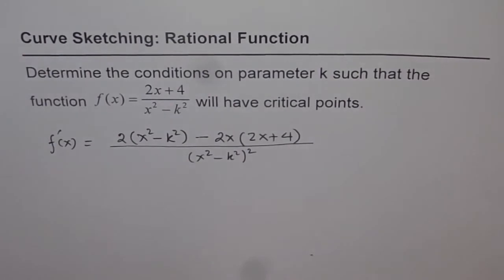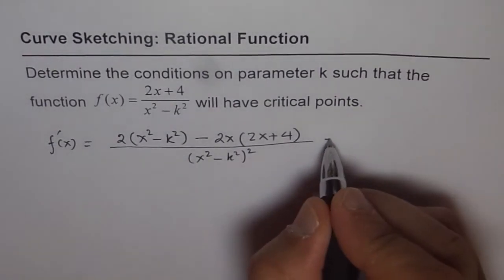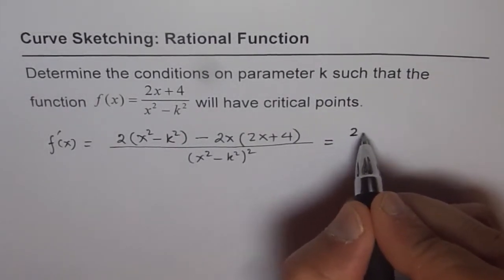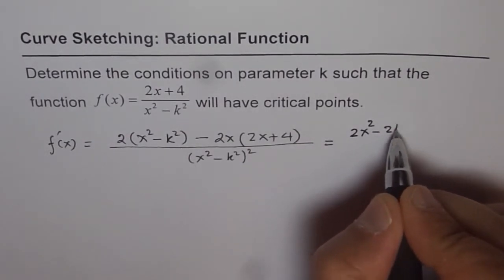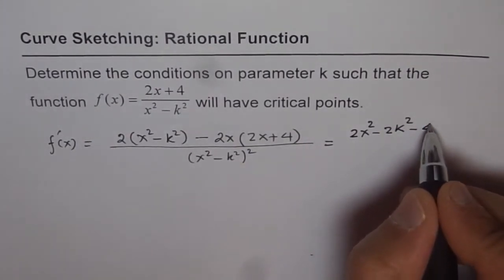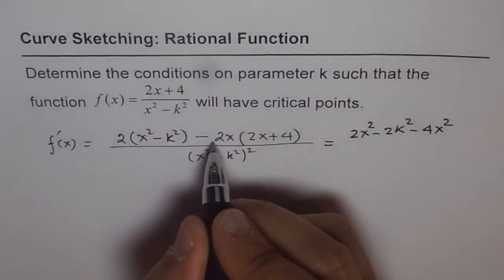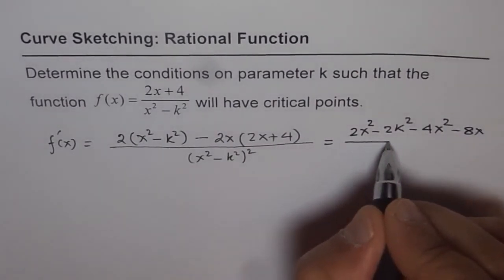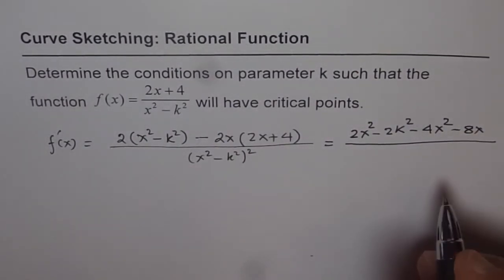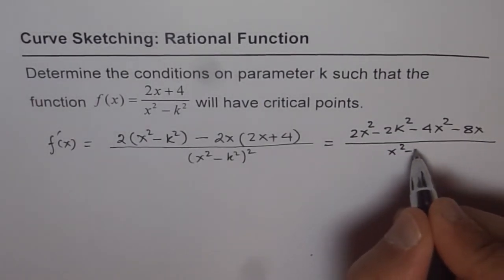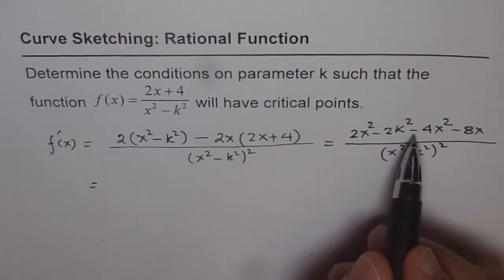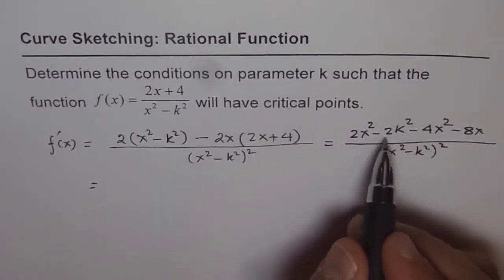We got the derivative now. Let's simplify: 2x² and here we get minus 4x. Multiplying them all out, we get 2x² - 2k² - 4x² - 8x, divided by (x² - k²)². Now let's simplify the numerator: 2x² - 4x² gives minus 2x², and we still have -2k².